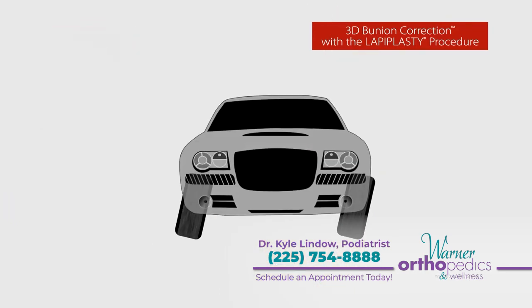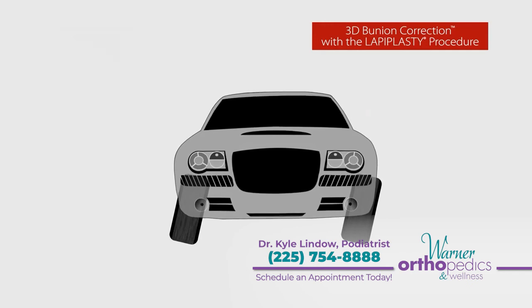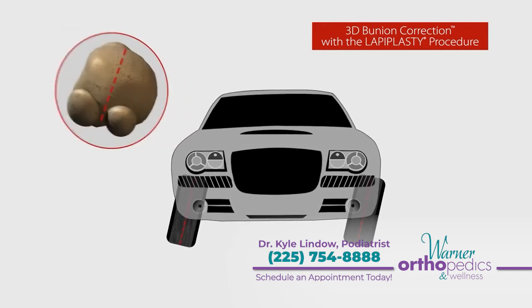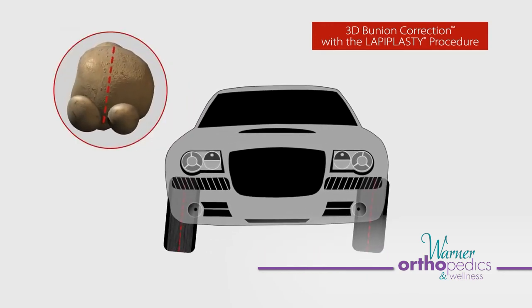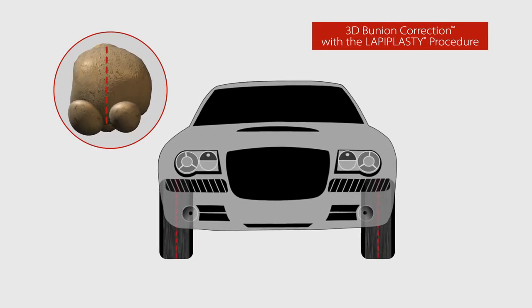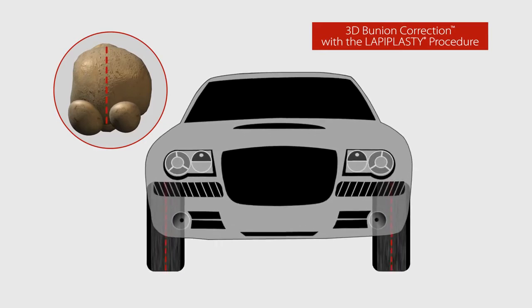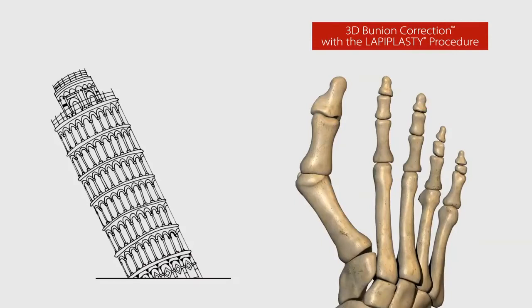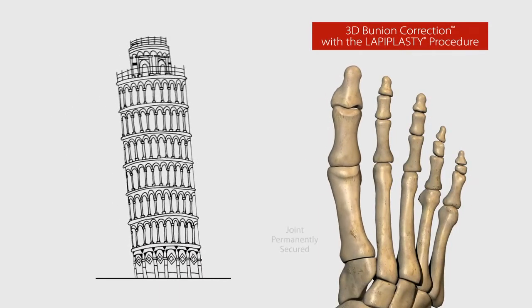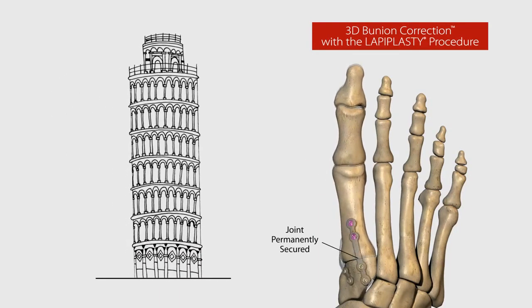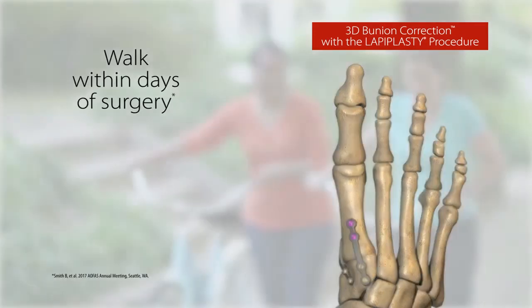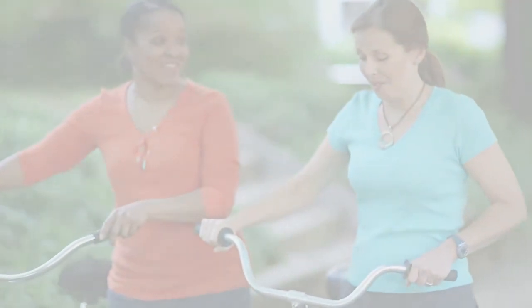Like a proper car alignment, the Lapoplasty procedure actually shifts and derotates the deviated bone — not only eliminating the bump, but restoring your metatarsal bone and big toe joint to normal anatomy. By stabilizing the foundation, it is designed to permanently secure the correction in place, which allows you to walk within days of surgery.